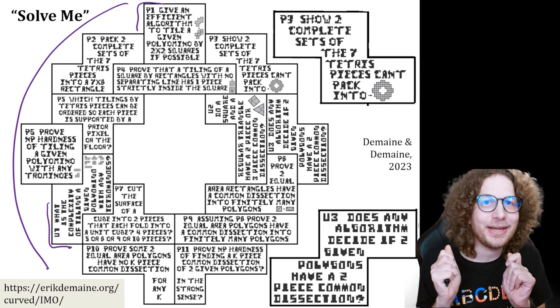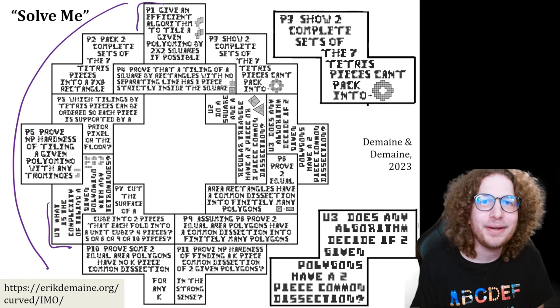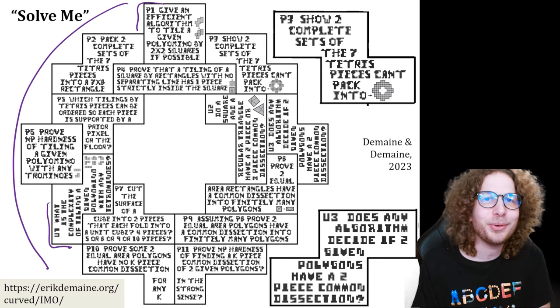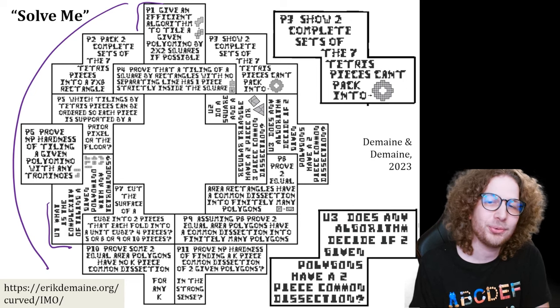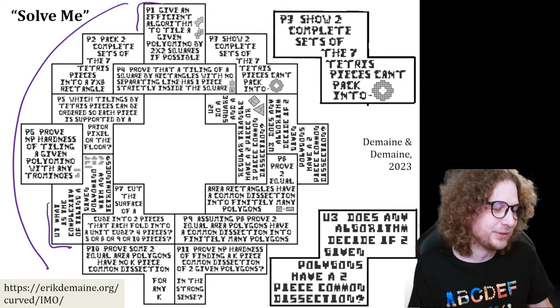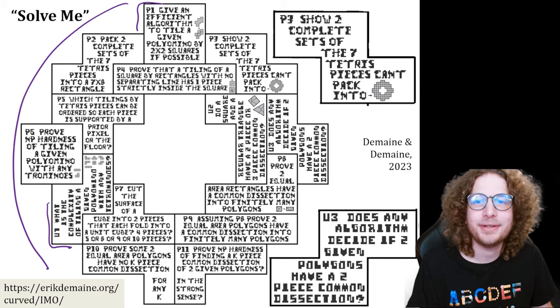An unsolved problem in this space is: is it even decidable whether two polygons have a two-piece dissection? Every two polygons have an n-piece dissection for large enough n, but for two pieces we don't even know whether there is an algorithm, let alone an efficient one. For polyominoes it's easy, but for general polygons — not so easy.